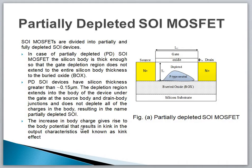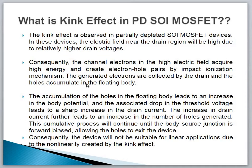The increase in body charges gives rise to a body potential that results in a kink in the output characteristics, well known as the kink effect. What is the kink effect in partial depleted MOSFET? The kink effect is observed in partial depleted SOI MOSFET devices. In these devices, the electric field near the drain region is high enough due to the relatively higher drain voltage.